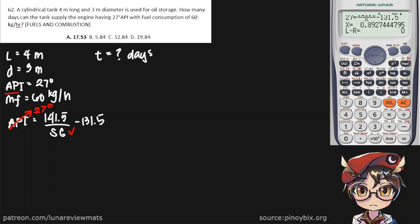Shift solve. And we do get an Sg of 0.893. And we multiply that by 1000. We get the density of our gas at 893 kilograms per cubic meter.